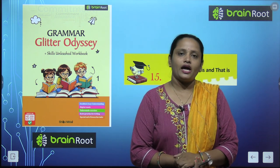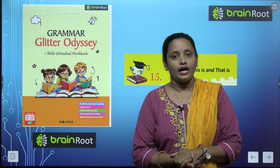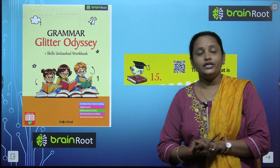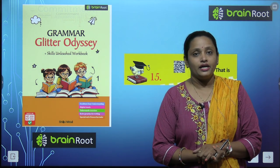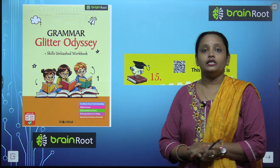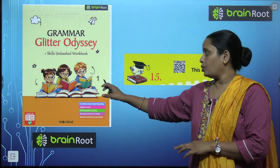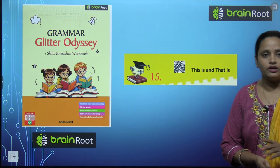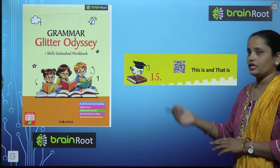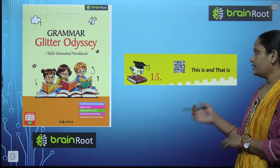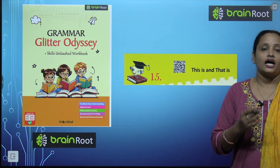Hello my dear kids, welcome back. I am Vandana and we are learning English grammar by Brain Root series. Here is a book, the name is Grammar Glitter Odyssey and this is book 1. Today we are going to start a new chapter which is chapter number 15 and the name is 'This is and That is.'